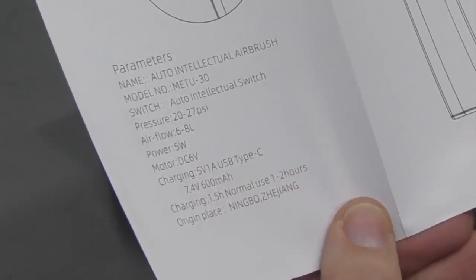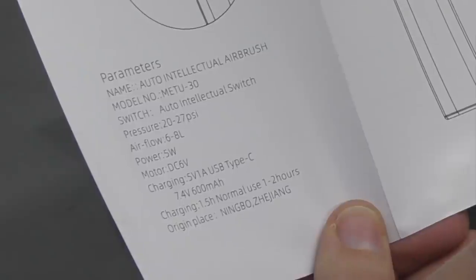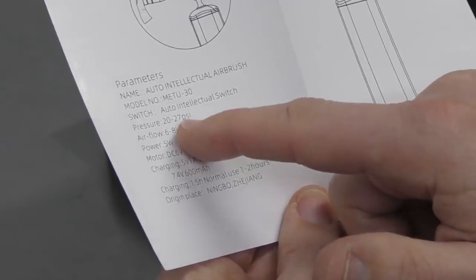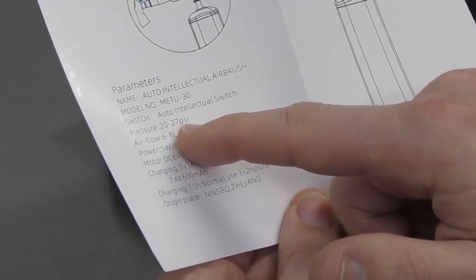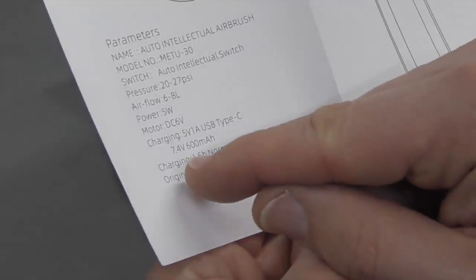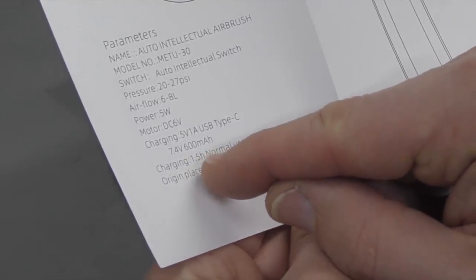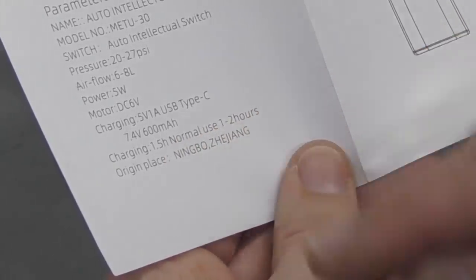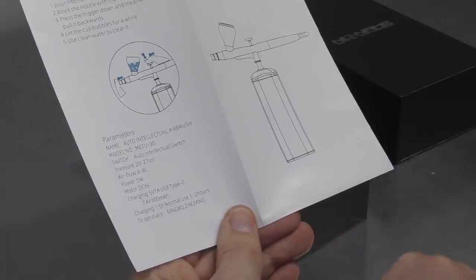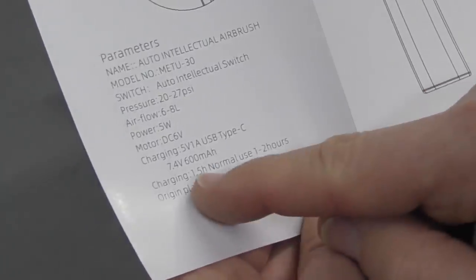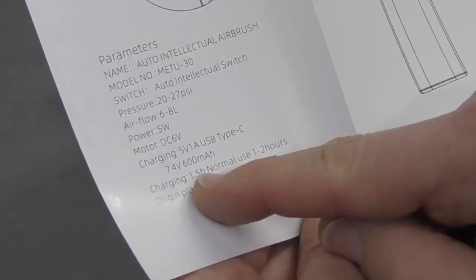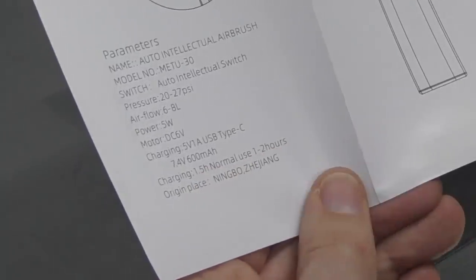It gives us some information on what this little brush can do. The air pressure is 20 to 27 psi. Charging 1.5 hours and normal use 1 to 2 hours. So I imagine that means it's going to take 1.5 hours to charge it so that you get 1 to 2 hours of normal use.